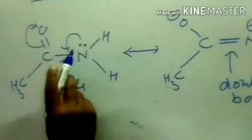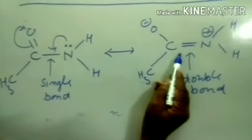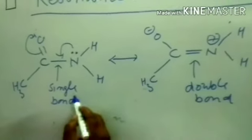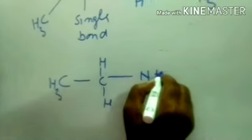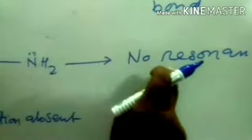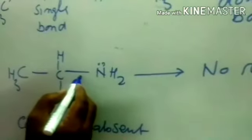So this C-N bond is neither single nor double. But in the case of ethylamine, conjugation is absent — it means no resonance. When there is no resonance, there is no change in bond length.